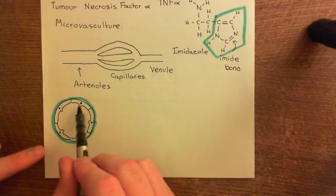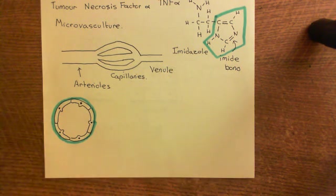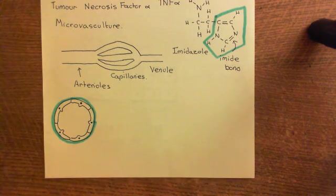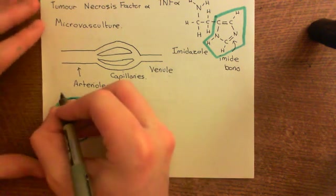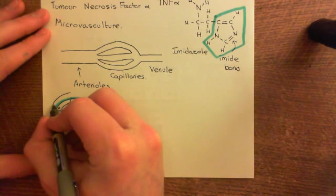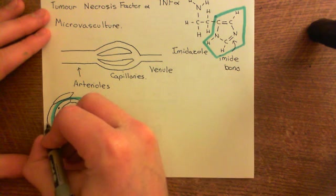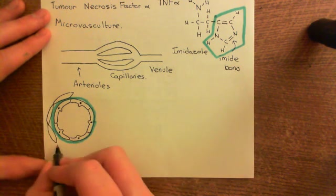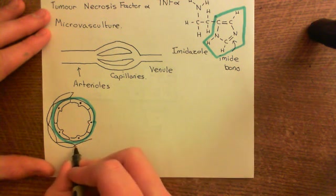The reason these cells haven't just flopped down is that they're attached to the basement membrane. Surrounding this, you then have a layer of smooth muscle. Even though this is a tiny blood vessel, you still have smooth muscle cells surrounding it. These smooth muscle cells are arranged circularly — you have multiple rings of smooth muscle cells around the outside.